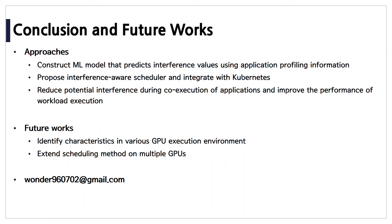This paper constructs an ML model that predicts interference values using application profiling information. Based on this model, we propose an interference-aware scheduler and its architecture. As a result, CoScheduleML reduces potential interference during co-execution of applications and improves performance of workload execution. Future work includes refinement and generalization of interference-aware co-scheduling for diverse workloads. Thank you for your attention. Please leave questions in Slack or feel free to reach out via email.